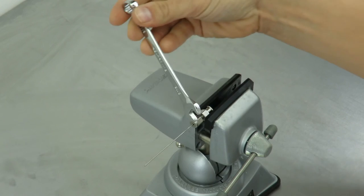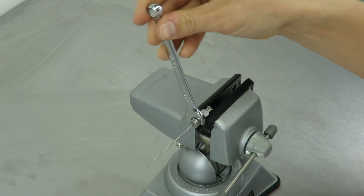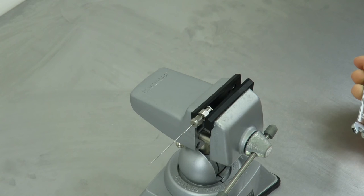Then, using the correct open end wrench, fully tighten the nut. And now you have a custom 20 gauge needle.